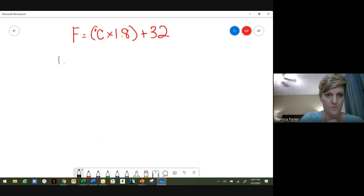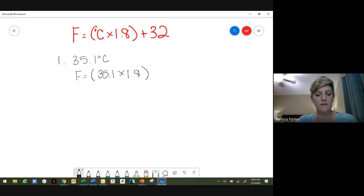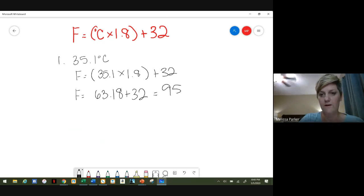So number one, we have 35.1 degrees Celsius. We're going to plug this in. Remember when we are plugging this in, we have to follow the order of operations, so that's please excuse my dear Aunt Sally or PEMDAS, right? Everything that's in the parentheses must be done first. So we're going to take 35.1 and multiply that times 1.8. Then you'll have 63.18, and then plus 32. All right, so then if you add 32, then you get 95.18, but we're going to round that to the nearest tenth, so we'll have 95.2 degrees Fahrenheit.